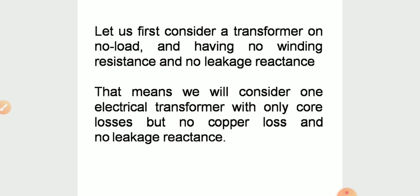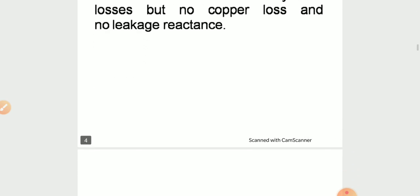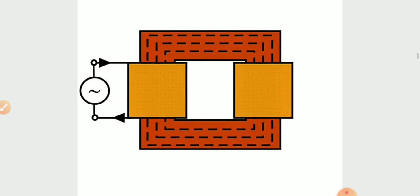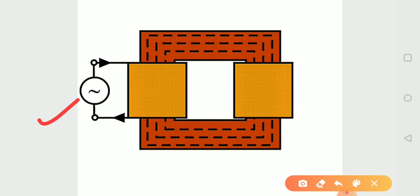We are considering only core loss and all other losses are neglected. So when the transformer is energized by the AC source — that is, when we apply the AC energy source to the primary side of the transformer — the current for magnetizing the core flows through the transformer.